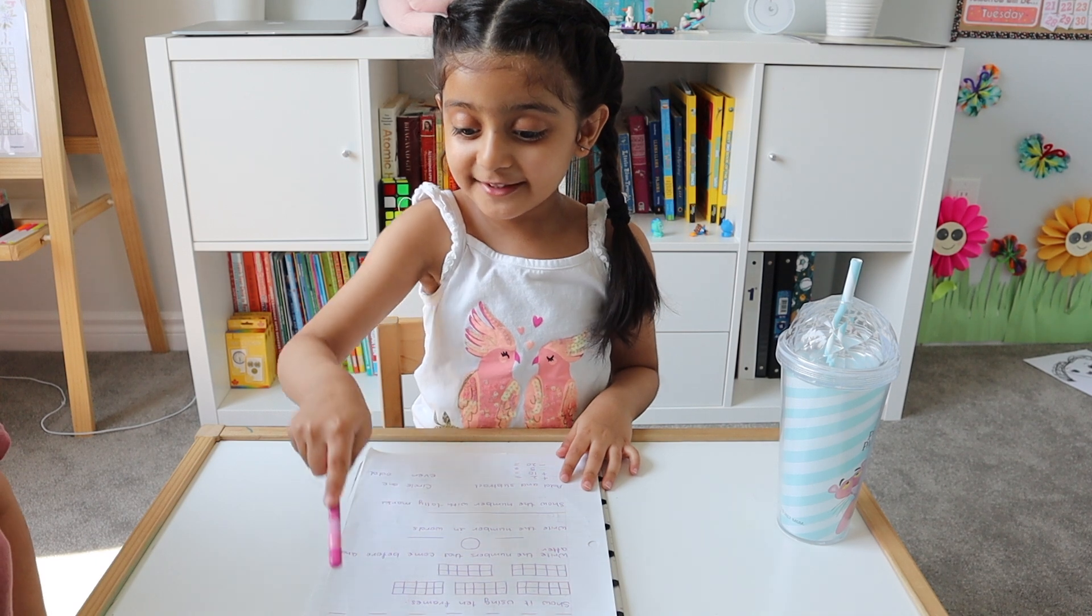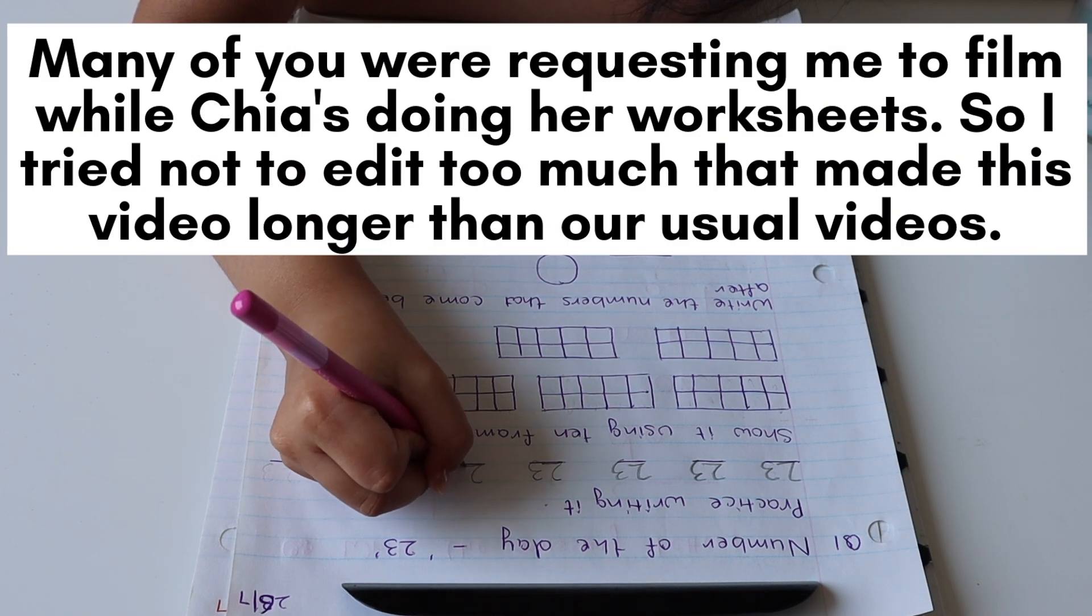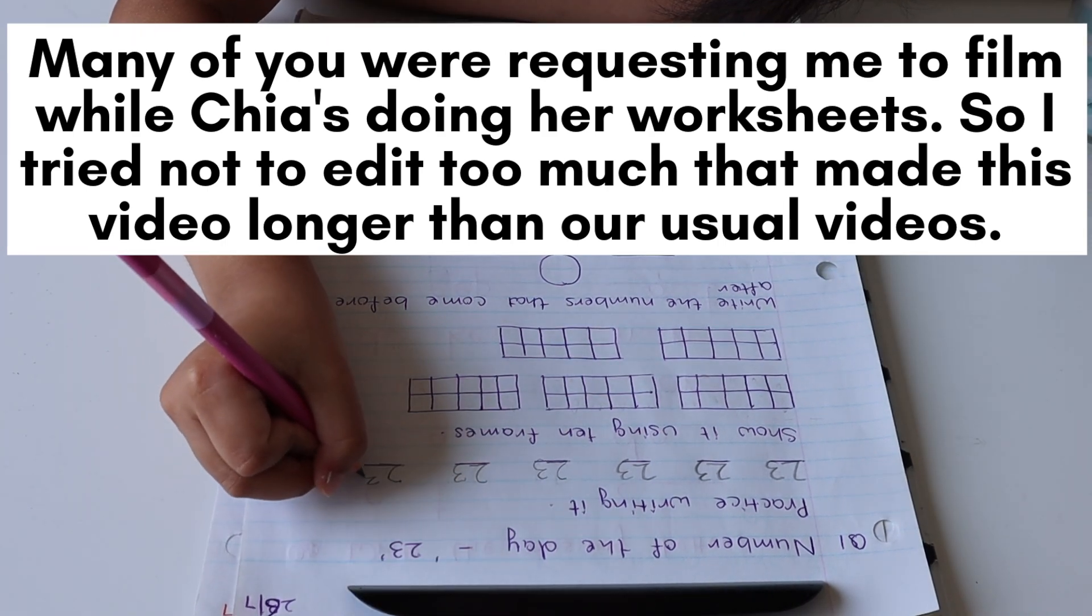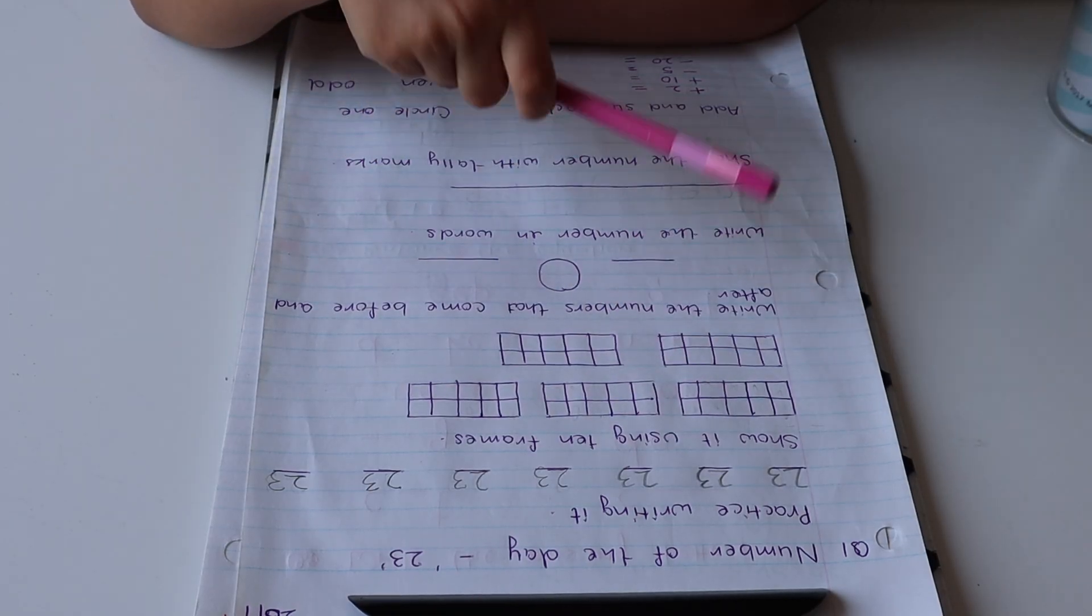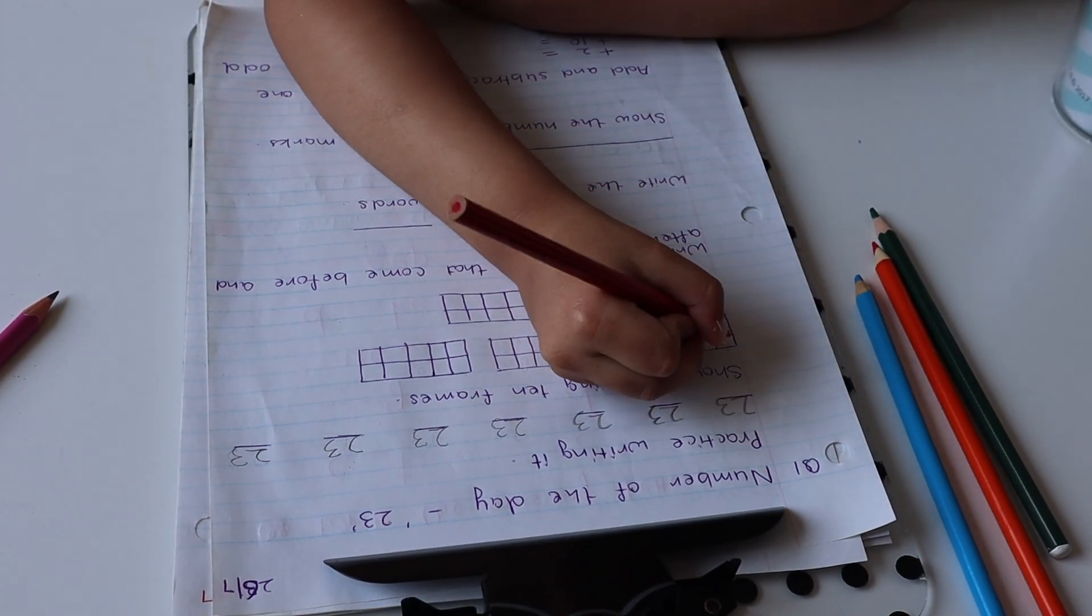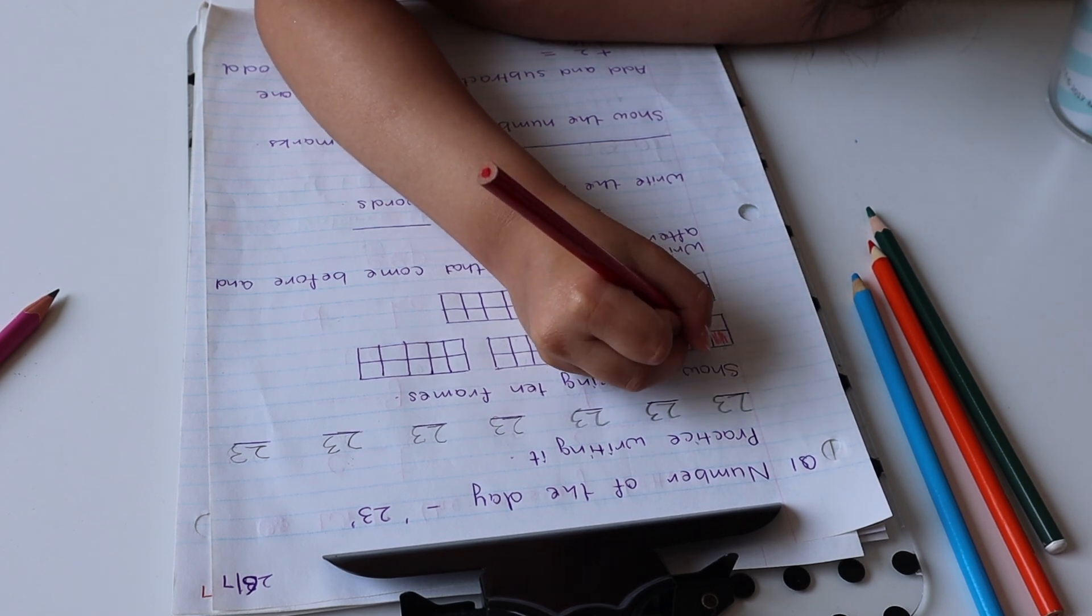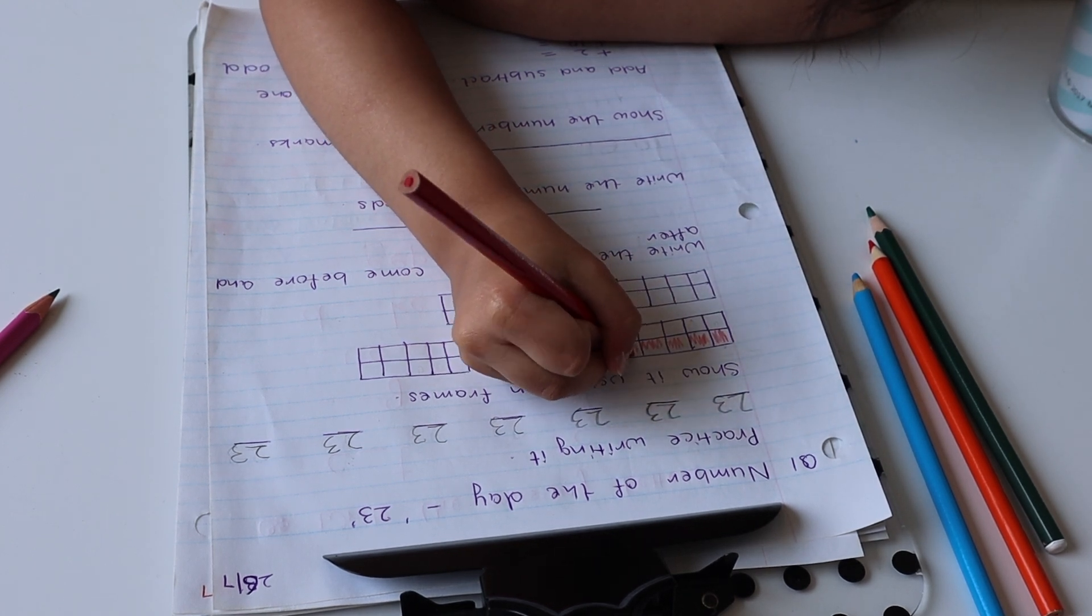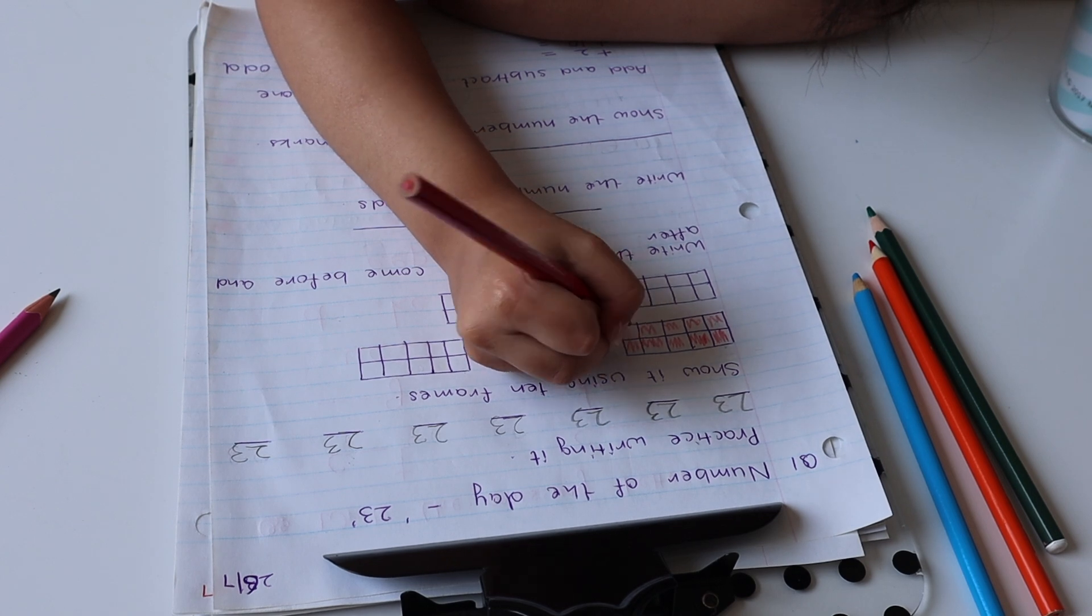Number of the day, 23. Practice writing it nicely. And for ten frames you can use colors. You can use one color for one box. You don't have to fill the whole box, just this much is fine. 1, 2, 3, 4, 5, 6, 7, 8, 9, 10.